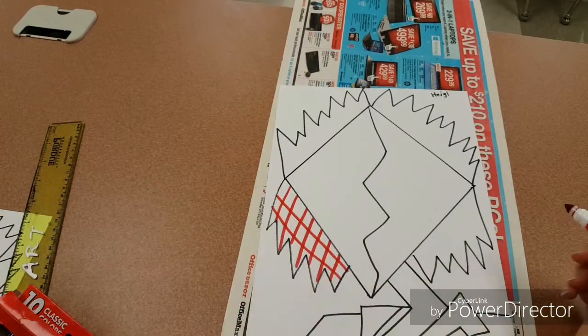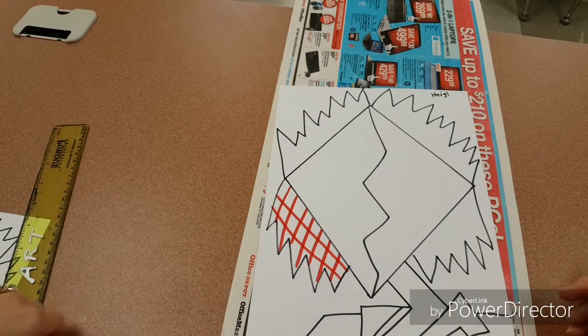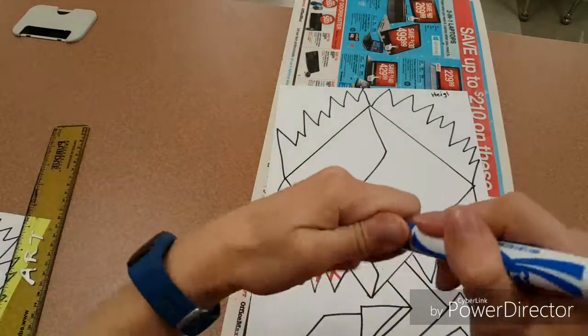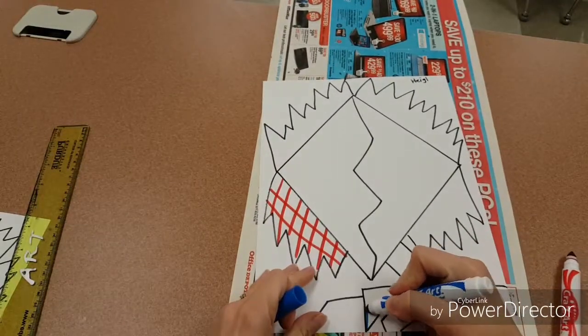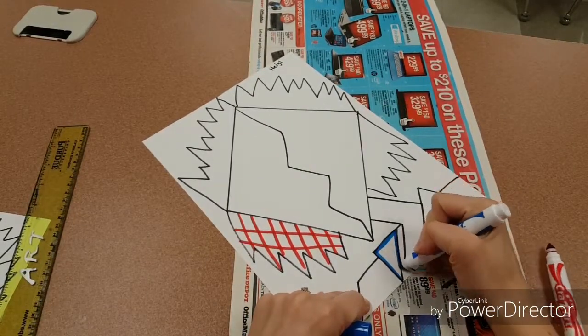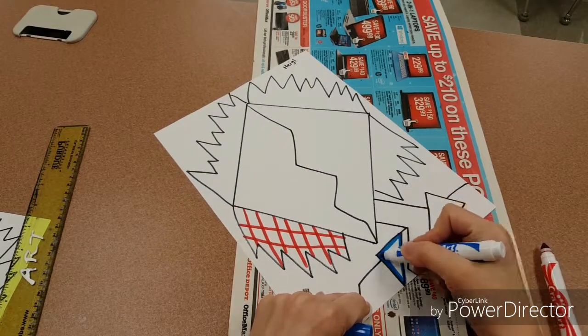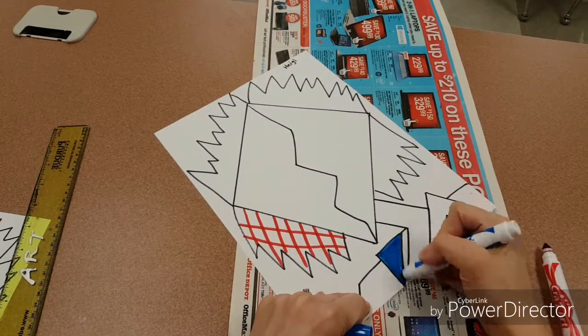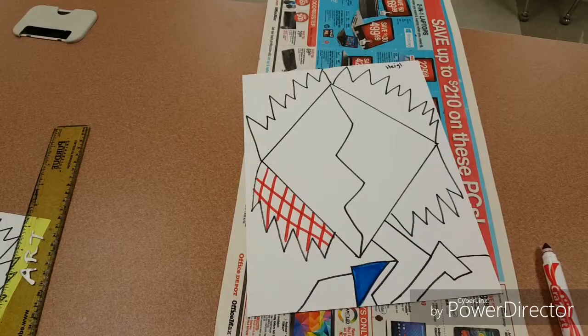Just remember, whatever you do choose to color in, that you take your time with your marker. It's best to kind of outline the object first, use the fat part of the marker, and color it in nicely.